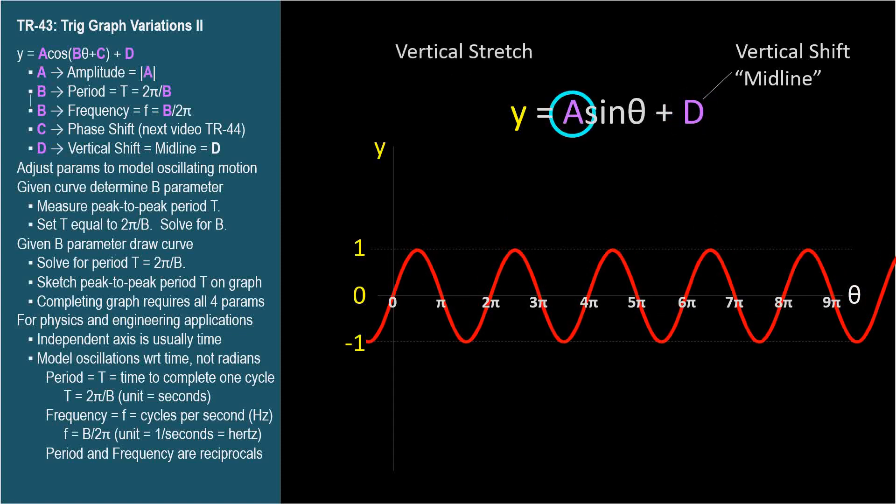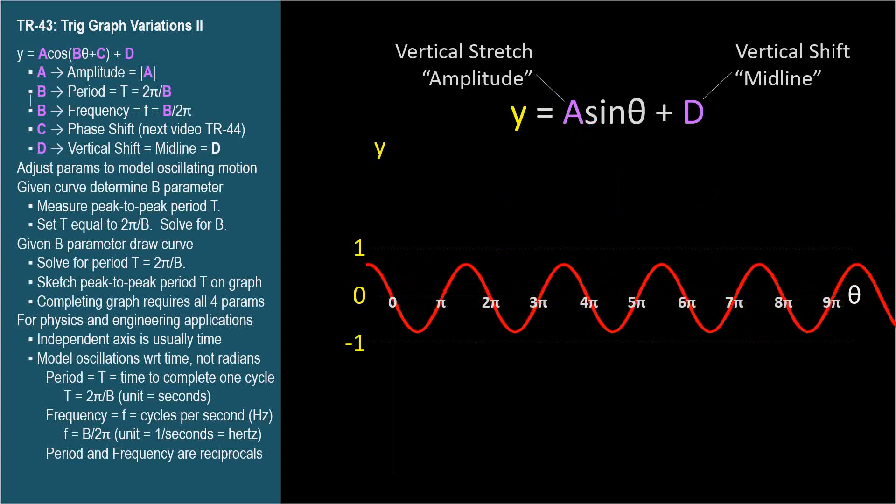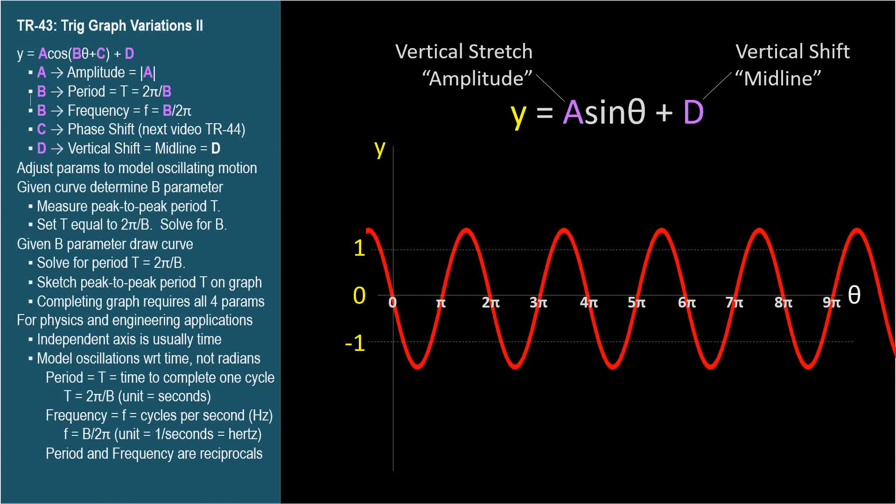The a parameter stretches or compresses the wave vertically. It's related to the amplitude because the amplitude is the absolute value of parameter a. The a parameter adjusts the graph, elongating or compressing it vertically, and even inverting it when the a parameter is negative.